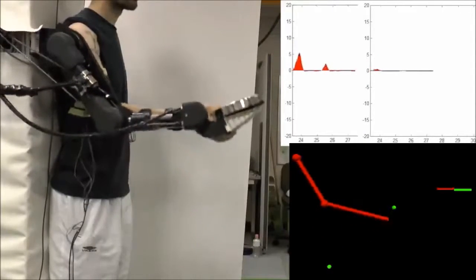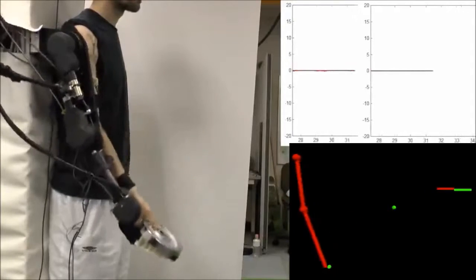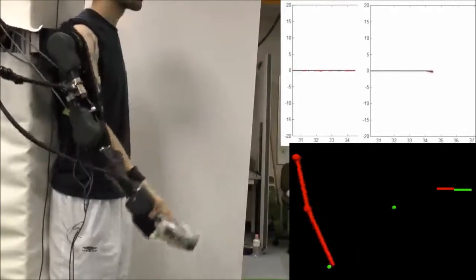The upper left graph shows the muscle activity feedback signal related to the shoulder joint, while the upper right graph shows the same for the elbow joint.